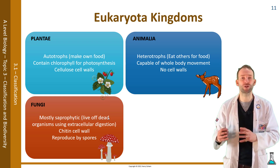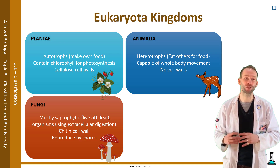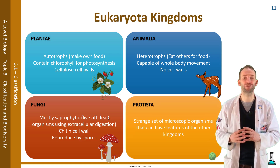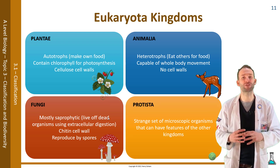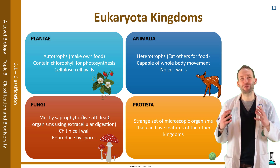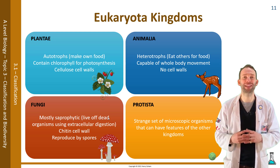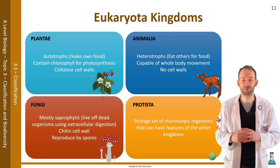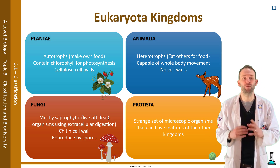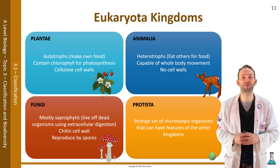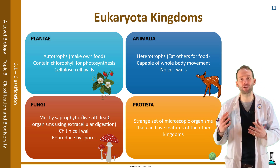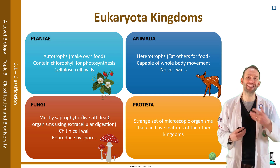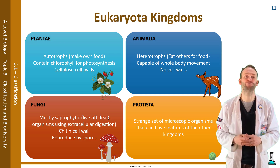The last kingdom is the protista, or protists. These are a strange group of organisms — they're microscopic. We call it the dustbin kingdom because it's basically anything that won't fit into the other kingdoms. They have slightly plant-like features, slightly bacteria-like features, and slightly animal-like features.